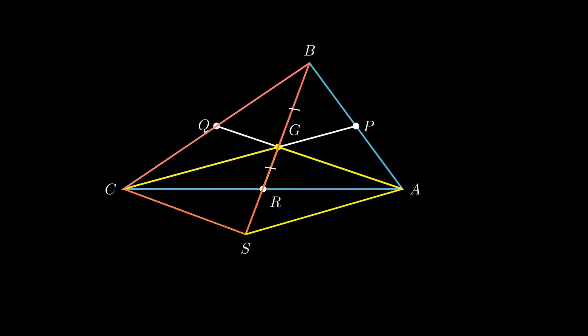Now, in triangle BCS, Q and G are midpoints. Therefore, by the application of midpoint theorem, segment QG is parallel to segment CS.